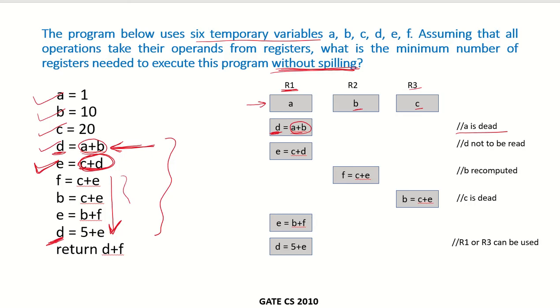It is not being used in the right hand side of any further arithmetic expression. It will be recomputed here. So d is not required. So we can store the value of e in R1 only. We can override d and store the addition of c and d in R1.